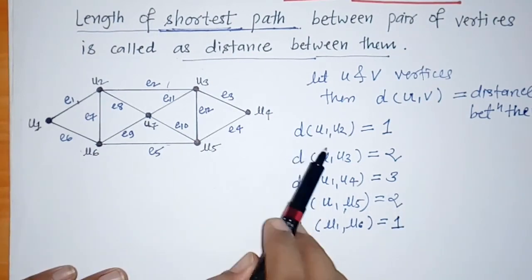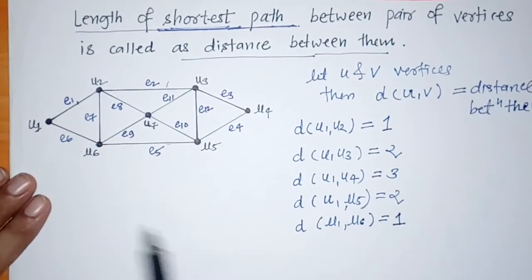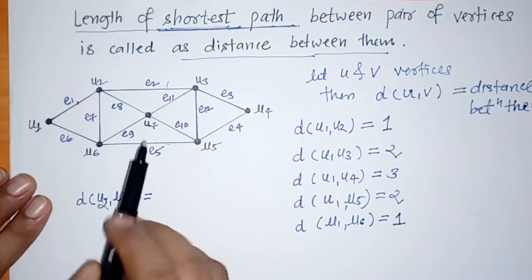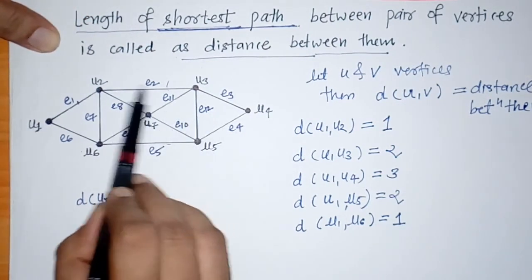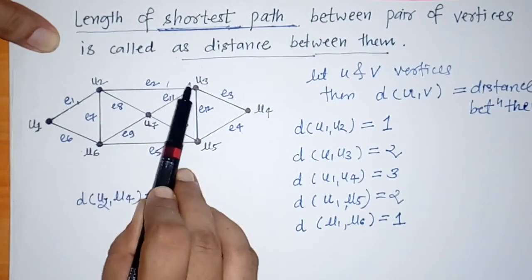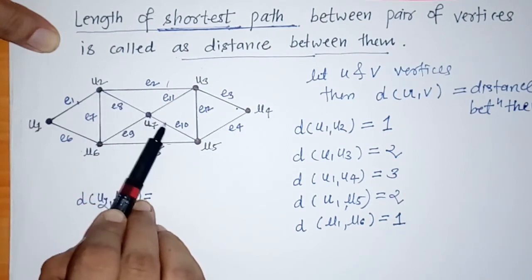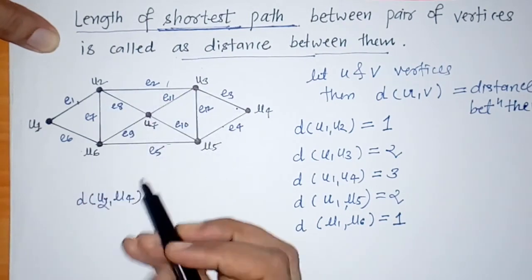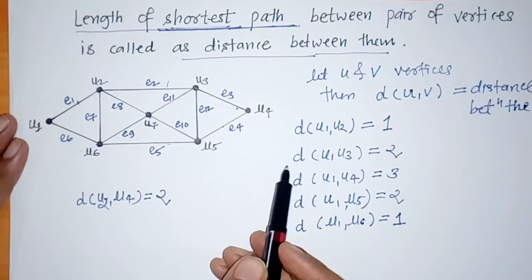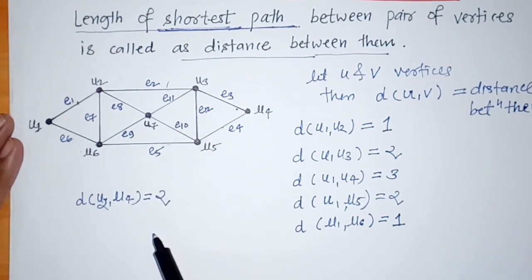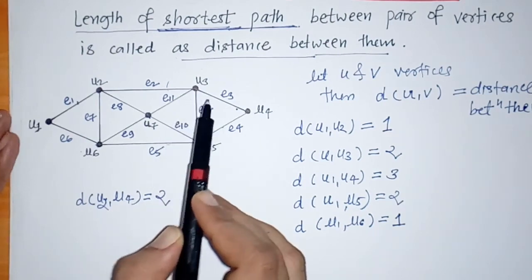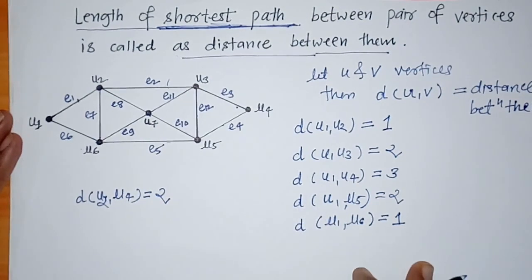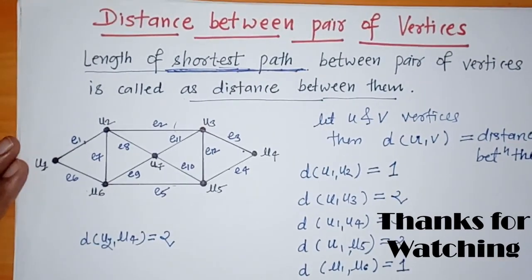Now if we find distance between vertex u2 and u4, we can check that there is a path of length 2. There is also another path including edges e8, e10, and e4, giving length 3. So the shortest path gives distance 2 between u2 and u4. In this way we can find distance between all pairs of vertices. The distance between a pair of vertices is always the length of the shortest path between them.